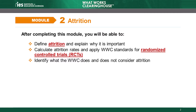This module introduces the concept of attrition, which is the loss of participants from a research study, and explains how the WWC assesses attrition for randomized control trials. The WWC considers attrition an important topic because attrition can change the composition of the research groups and potentially affect the estimated impact of the intervention being tested in the study.